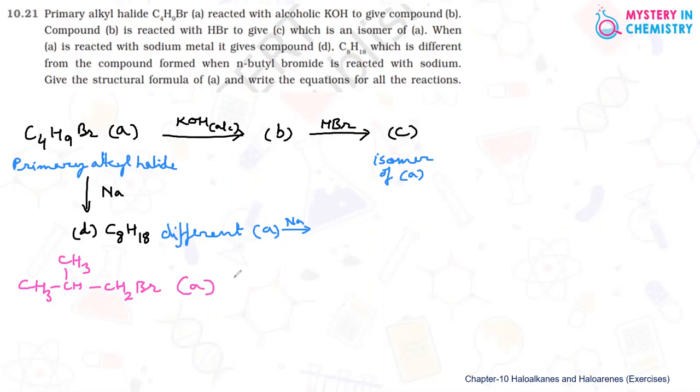And this is when treated with sodium in presence of dry ether. The product will be CH3-CH(CH3)-CH2 joining CH2-CH(CH3)-CH3. And this is also CH3. So here, product, molecular formula is same, that is C8H18.